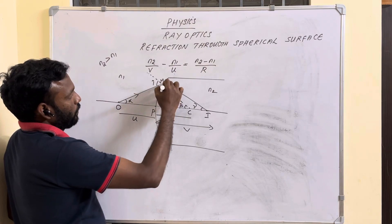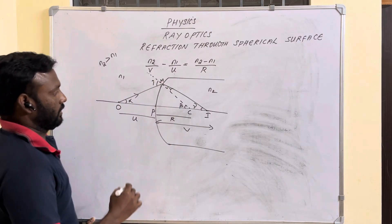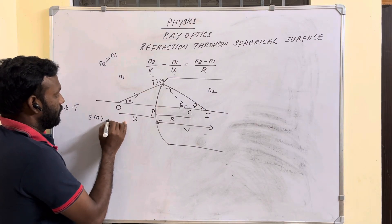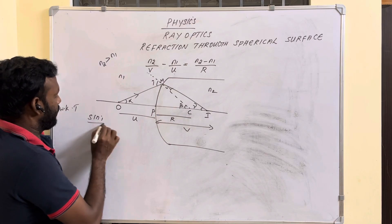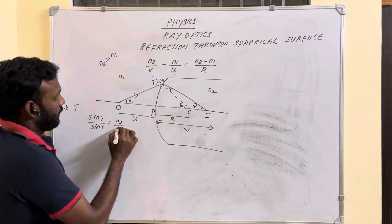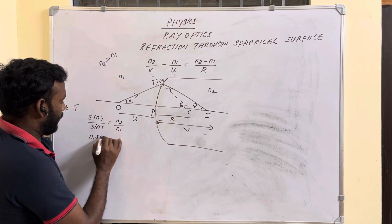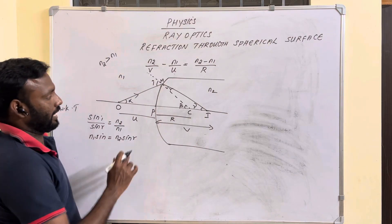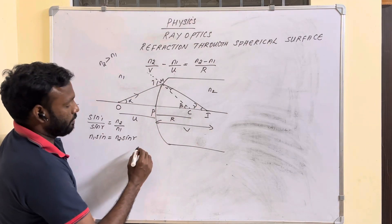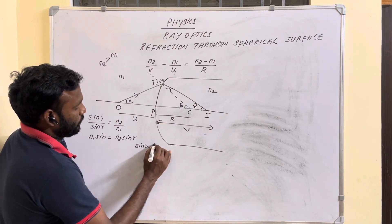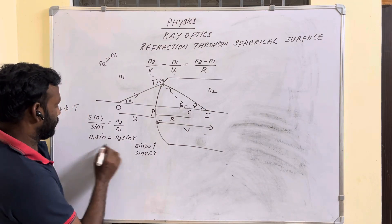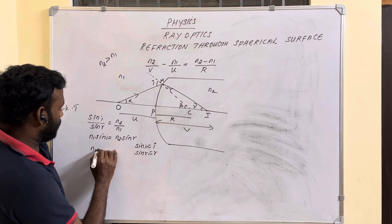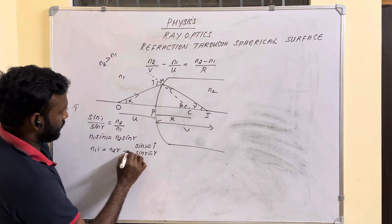As the rays are paraxial for a small aperture, we can consider this line as straight. From Snell's law: sin i / sin r = n2 / n1, which gives n1 sin i = n2 sin r. Since the rays are paraxial the angles are small, so by small angle approximation sin i ≈ i and sin r ≈ r. This equation becomes n1·i = n2·r. Let this be equation number one.